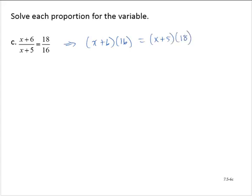Applying the distributive property on both sides gives 16x plus 96 is equal to 18x plus 90. I see that this is a linear equation in one variable x. So let me subtract the 18x from both sides. Negative 2x plus 96 is equal to 90.